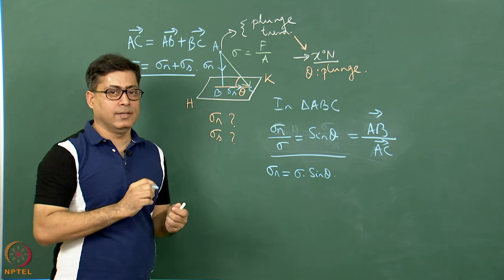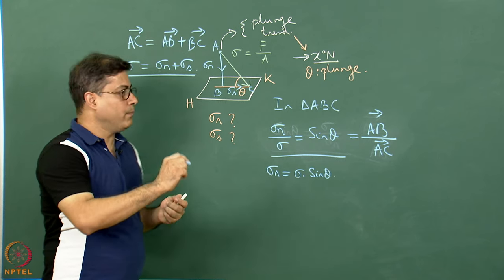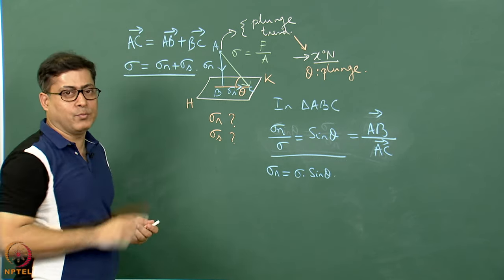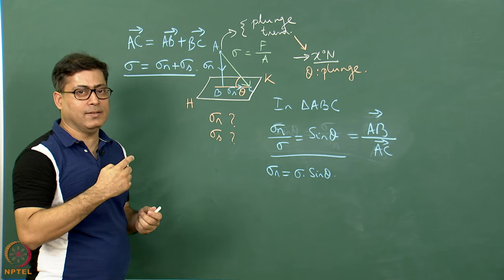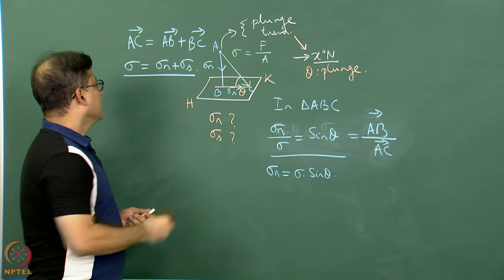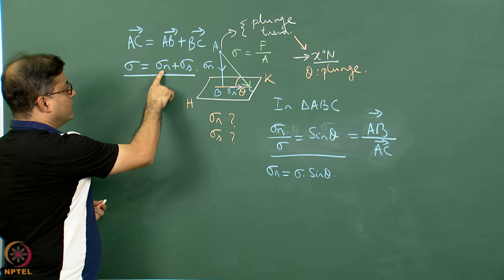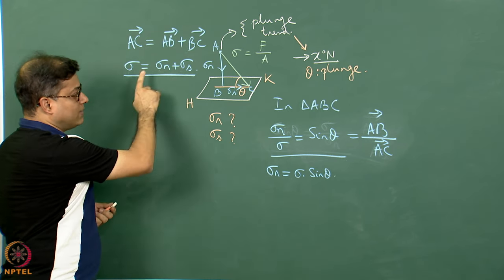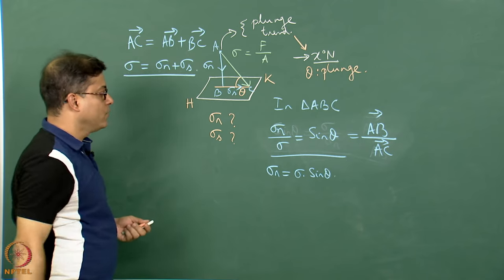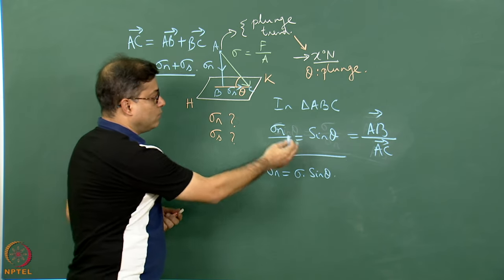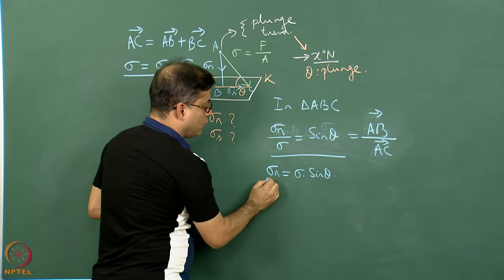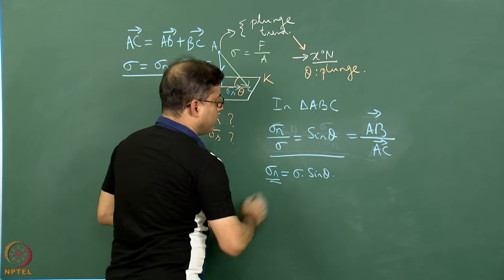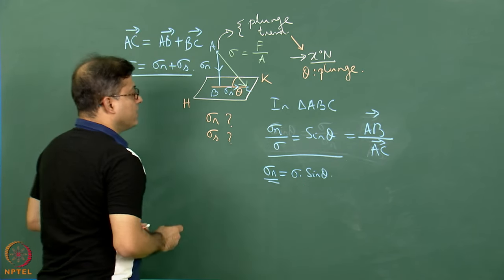When you write these in your paper, they should be written in bold font — bold will indicate the vector. So this is a vector addition; it is not like 3 plus 2 equals 5. We have shown the normal stress is equal to sigma multiplied by sin(theta).